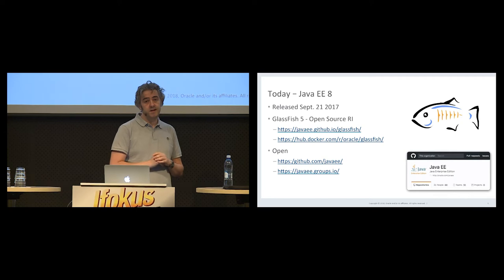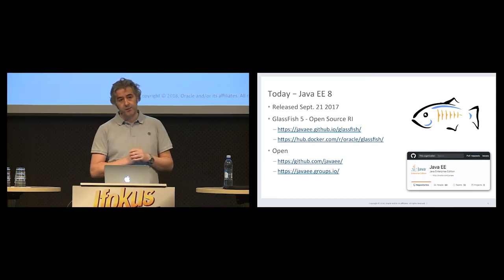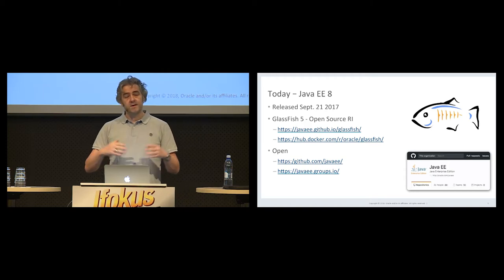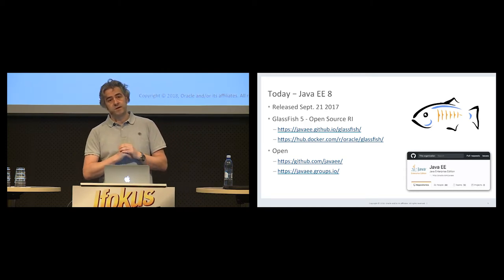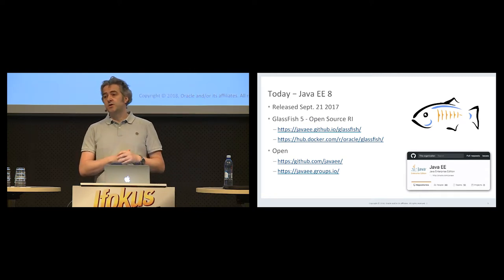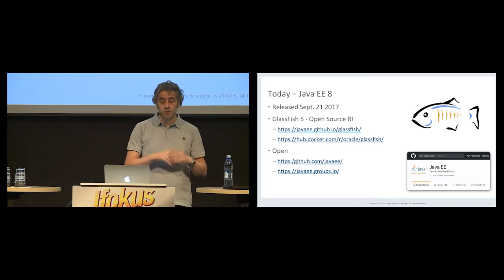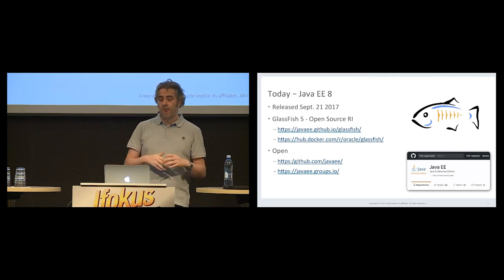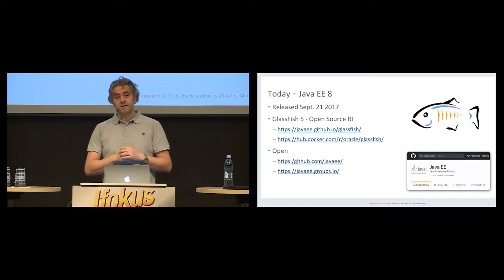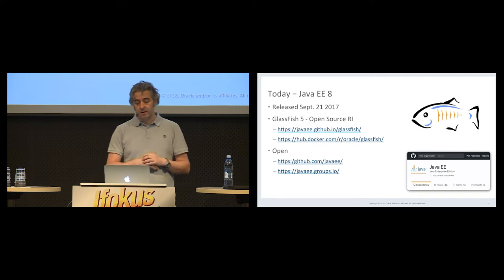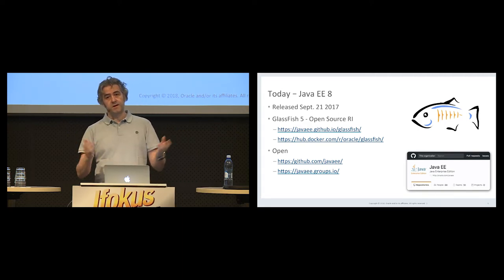The first piece of good news is that since then, Java EE8 has been finalized and released. In September last year, we finalized all the specifications of Java EE8 — the umbrella specification but also all the underlying specifications such as JAX-RS 2.1, CDI 2, Bean Validation 2, and so on. At the same time, we also released GlassFish 5, which is the open source reference implementation.